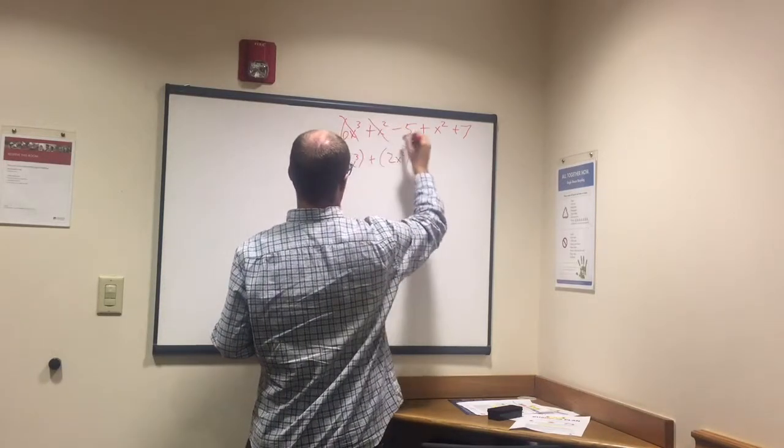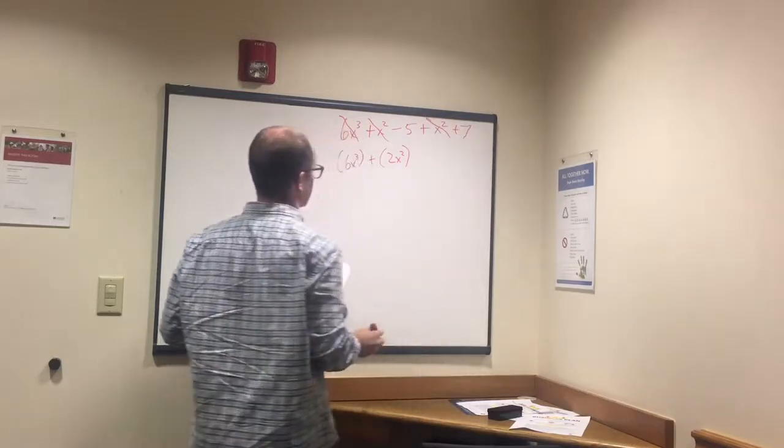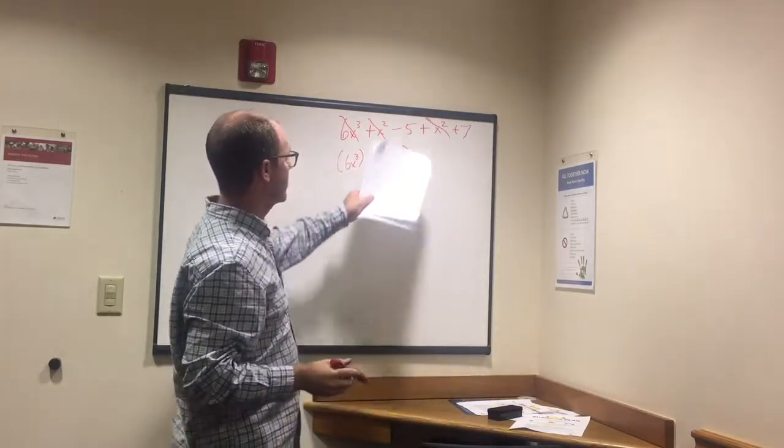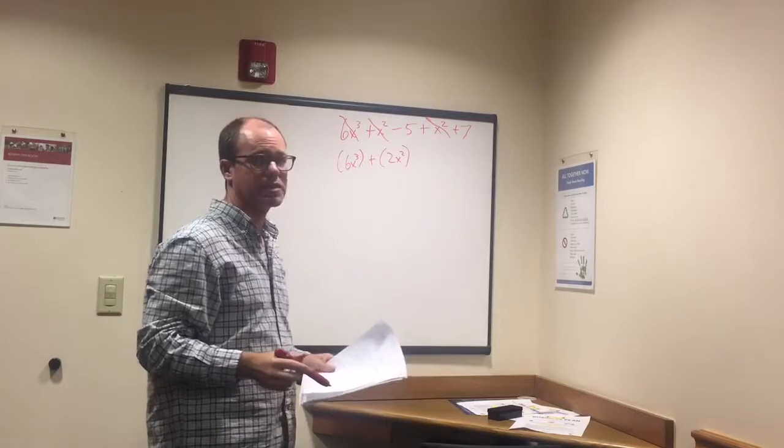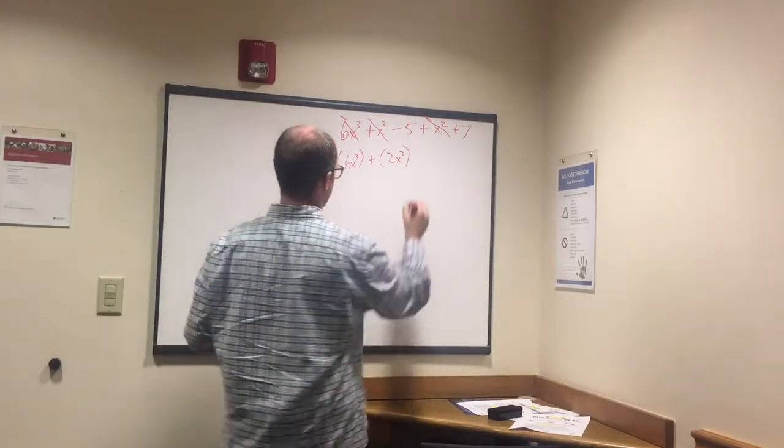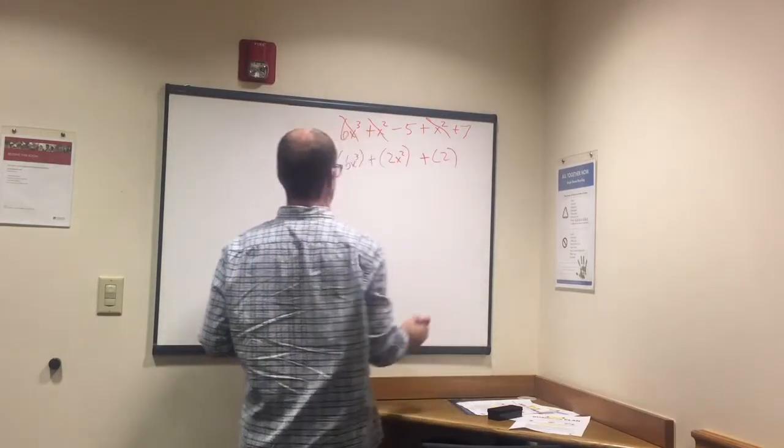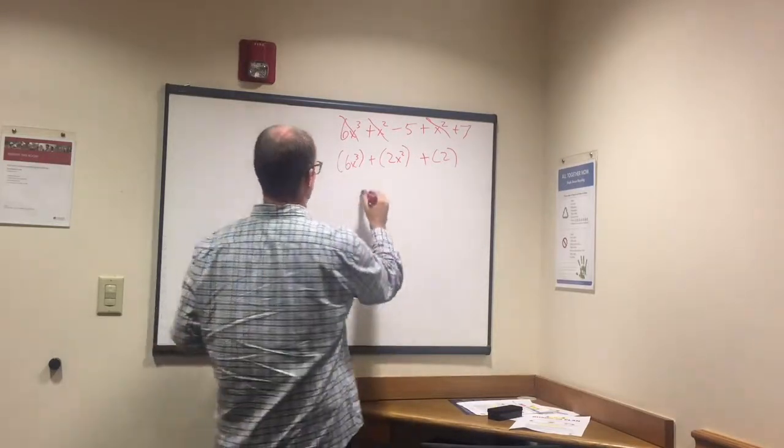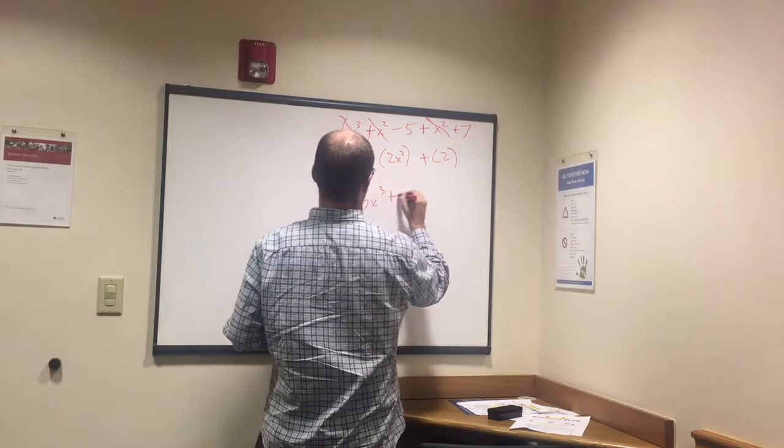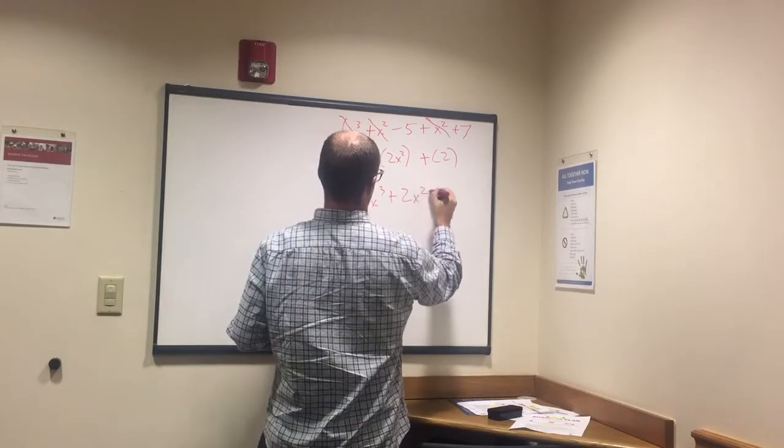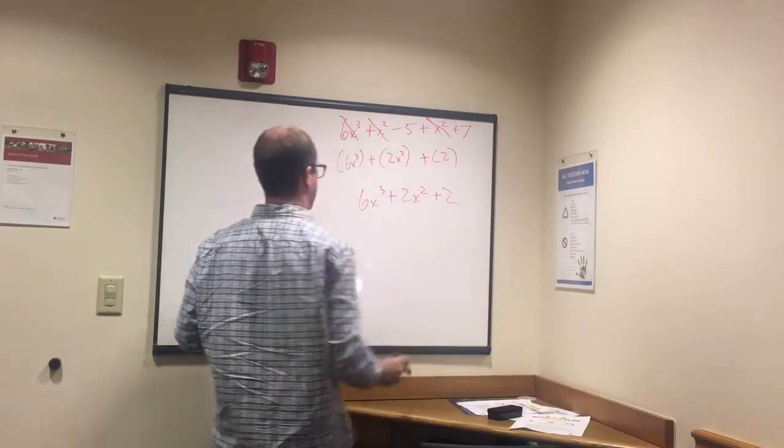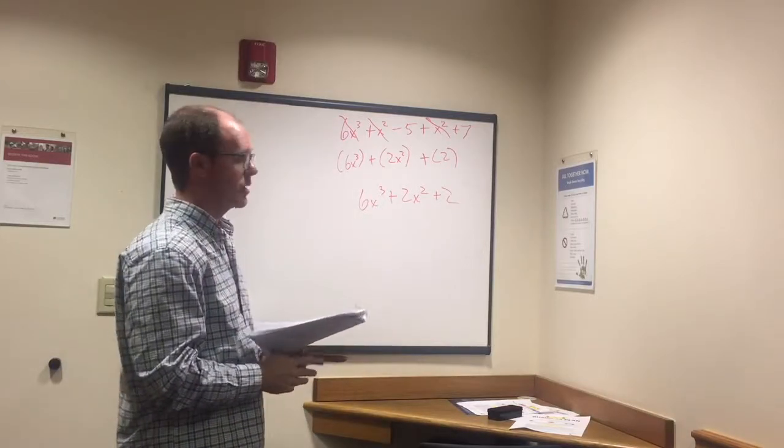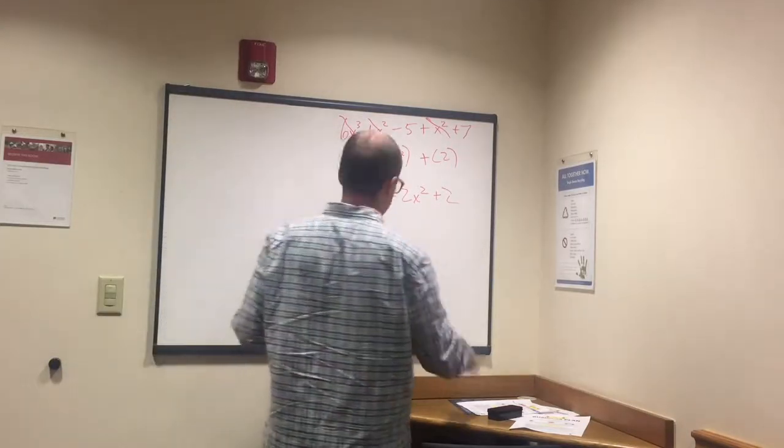Then we have all that's left, minus 5 plus 7, that's 2. And that's our answer. Usually it'll be written out without the parentheses: 6x to the third plus 2x squared plus 2.